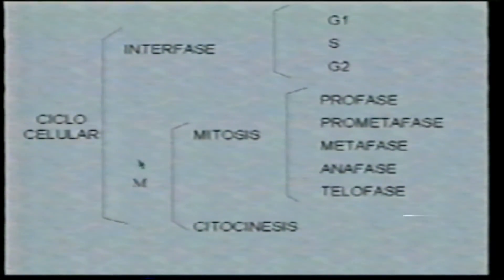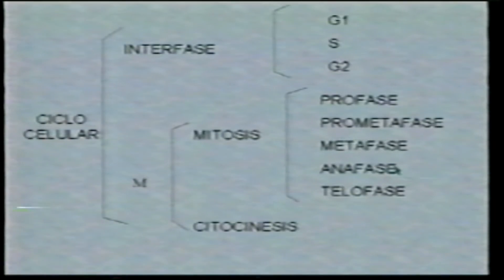¿Qué fases forman la mitosis y qué características tienen? La fase M en realidad se compone de dos partes: la mitosis, que contiene la profase, la prometafase, metafase, anafase y telofase; y además la citocinesis, que se solapa con la anterior y consiste en que la célula se divida en dos. En la mitosis lo que pasa es que se duplica el material genético y se forman dos núcleos. En la primera etapa, la profase, se caracteriza porque la cromatina, que contiene el DNA, se condensa y forma los cromosomas.